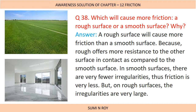Next question: Which will cause more friction, a rough surface or a smooth surface, and why? A rough surface will have more friction because it has more irregularities, so there will be more interlocking. A smooth surface has very few irregularities, so interlocking will be less and friction will be less. A rough surface causes more friction than a smooth surface because it offers more resistance to the other surface in contact.